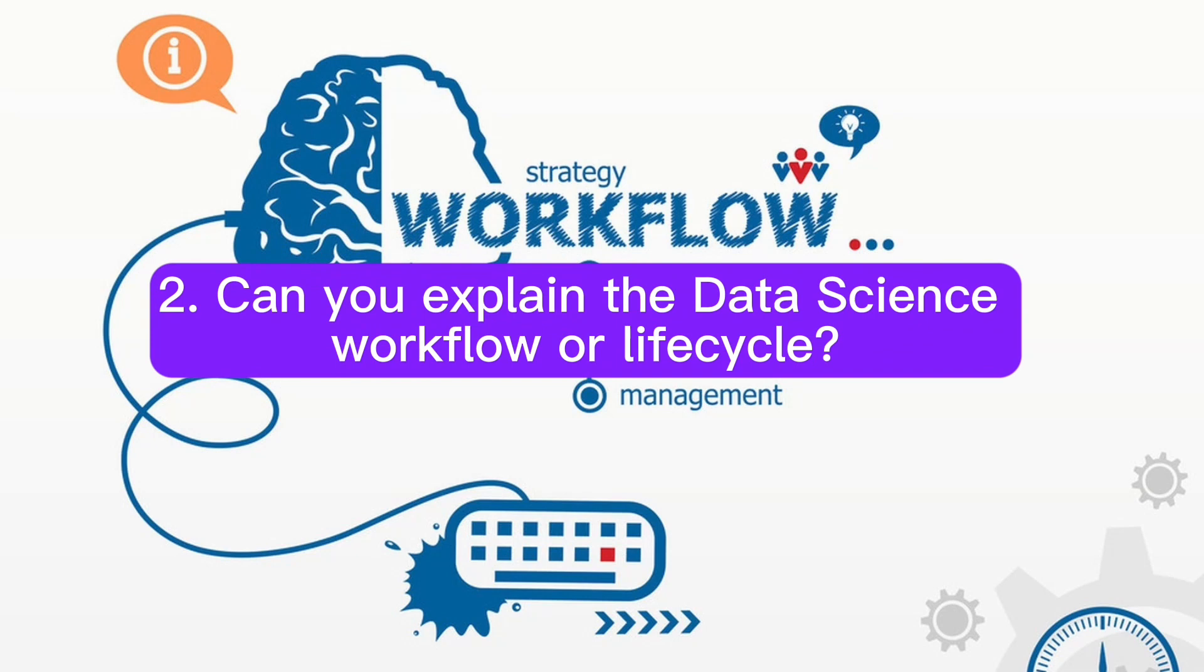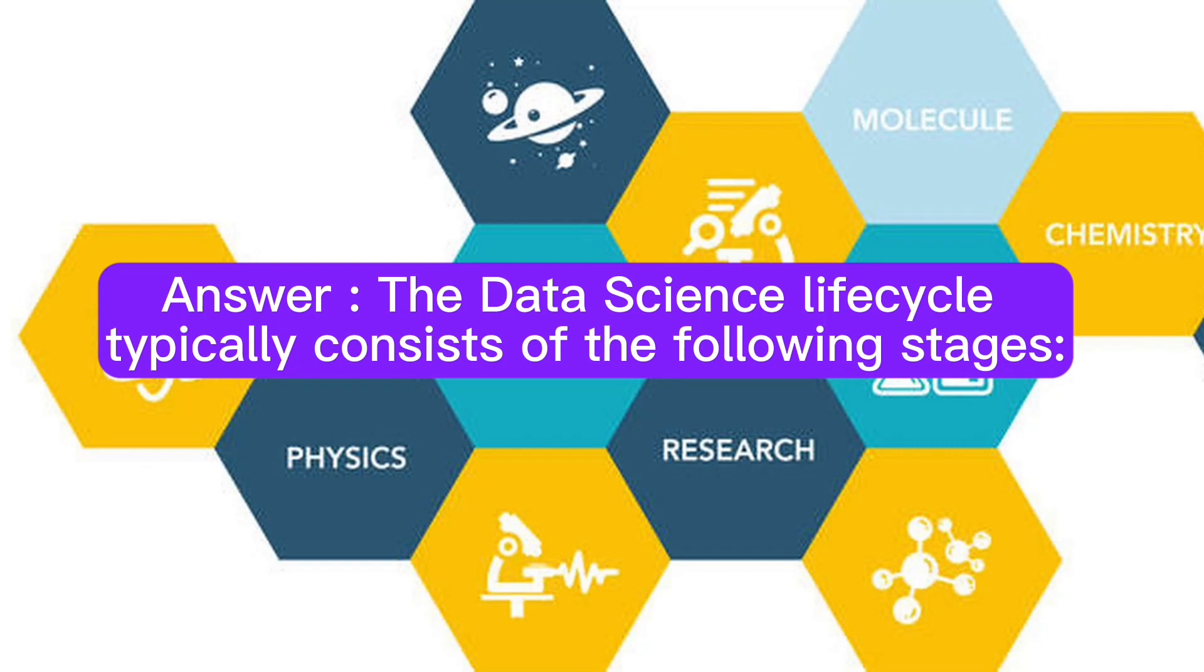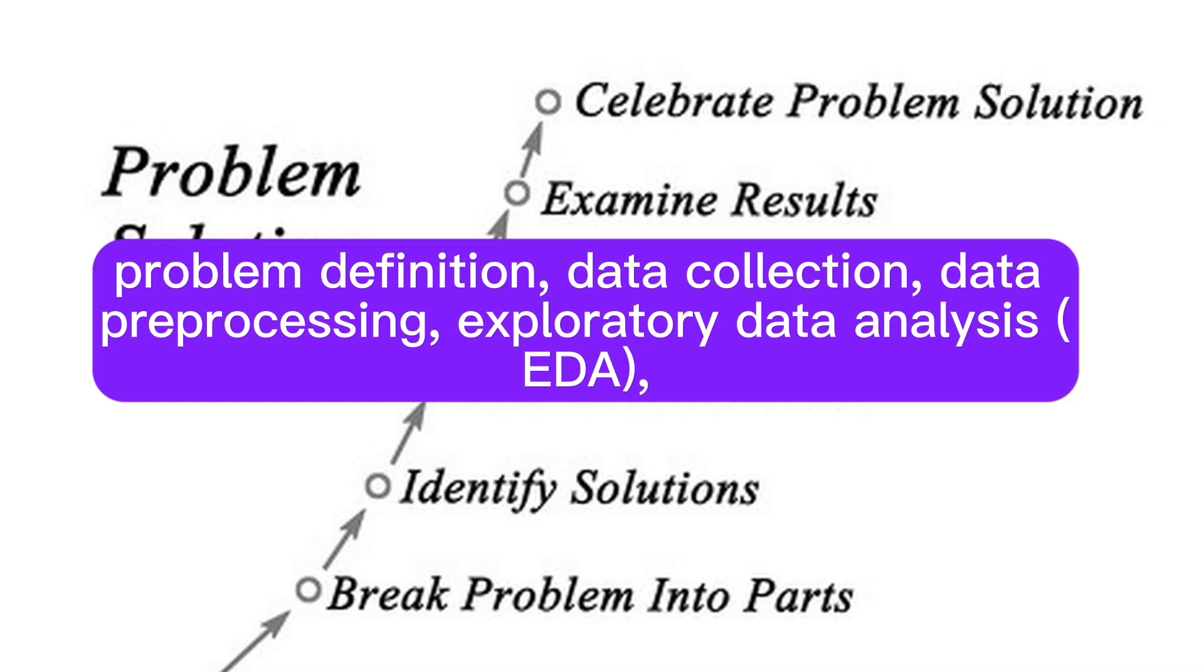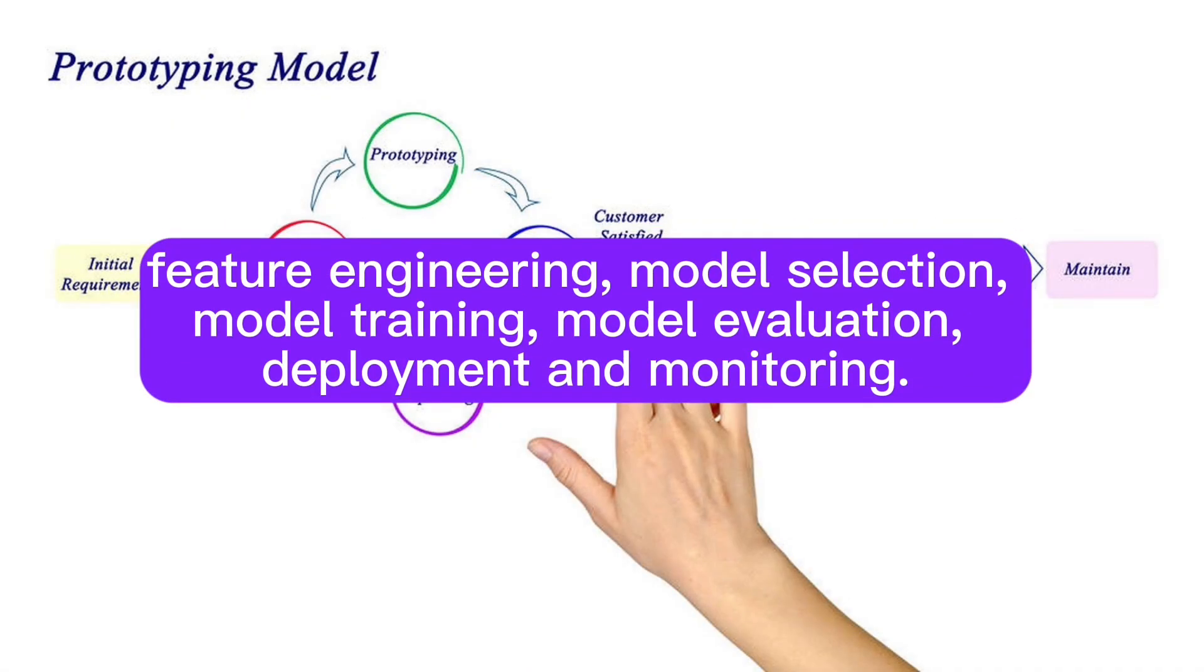Question 2: Can you explain the data science workflow or life cycle? Answer: The data science life cycle typically consists of the following stages: problem definition, data collection, data preprocessing, exploratory data analysis (EDA), feature engineering, model selection, model training, model evaluation, deployment, and monitoring.